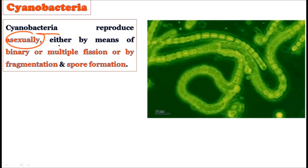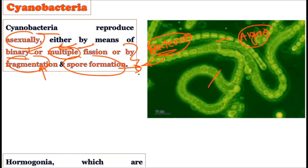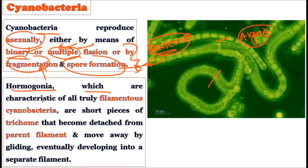Cyanobacteria reproduce by asexual methods: by binary fission, multiple fission, fragmentation, or spore formation. These reproductive characteristics align them more with prokaryotes. There is no sexual reproduction. Hormogonia are characteristic of all truly filamentous cyanobacteria and are used as a special structure for vegetative reproduction.